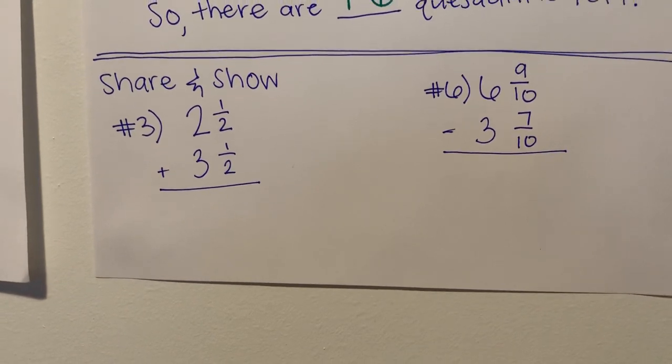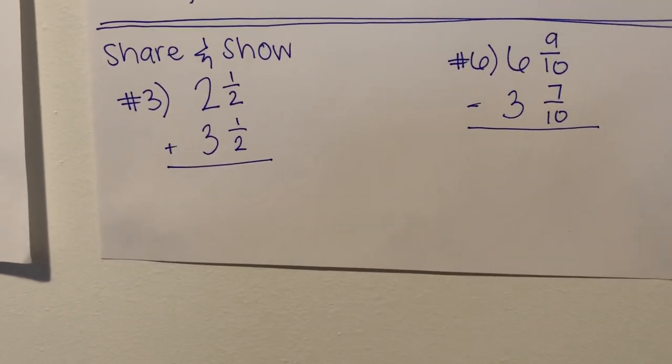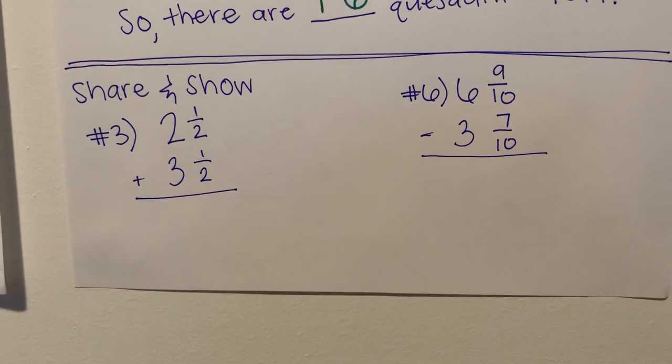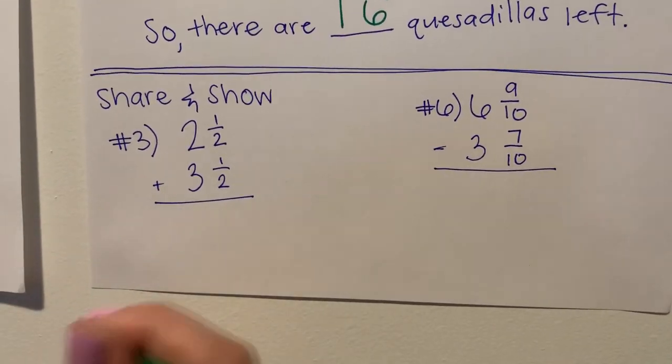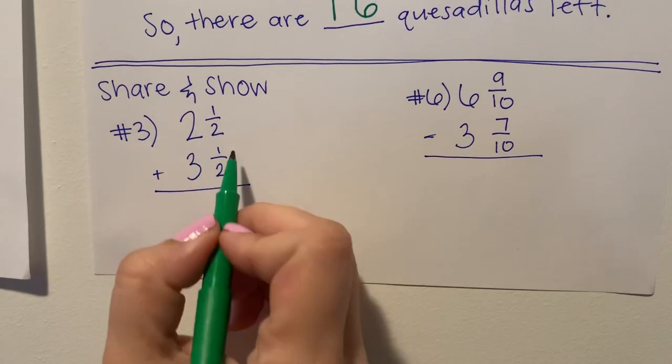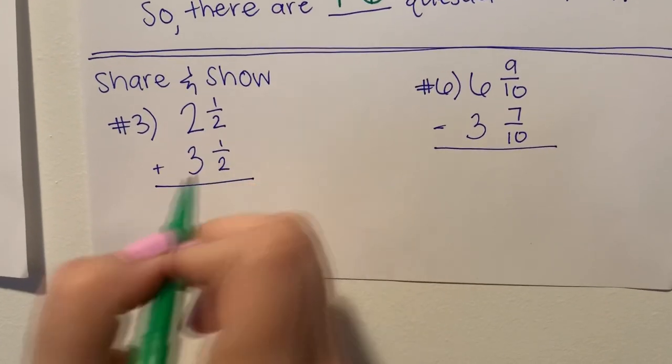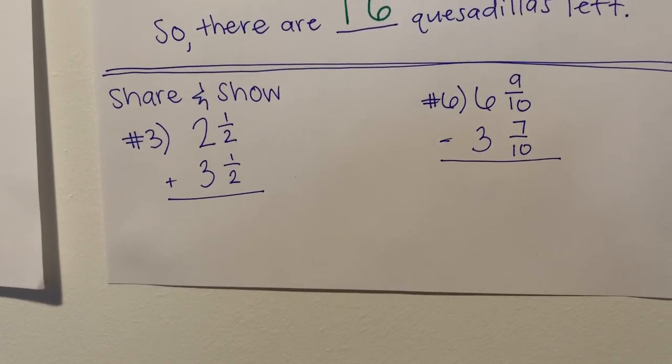And so when I'm thinking back to what we did during our lesson, I know that the first step when I'm adding mixed numbers is to add fractional parts. So I'm going to look at my fractional part of one half and my other fractional part of one half as well. And I'm going to add one half plus one half. I can do this multiple ways.